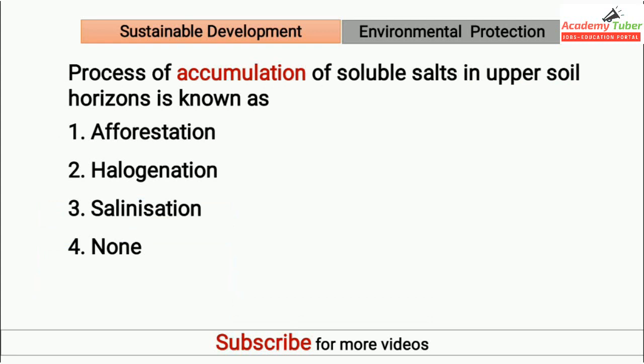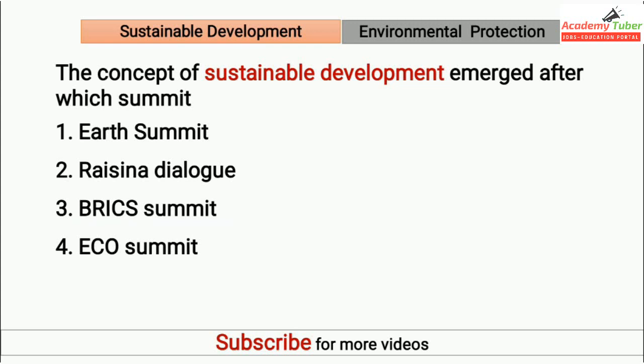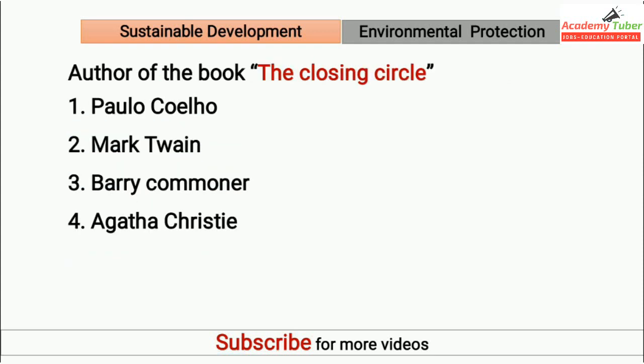Process of accumulation of soluble salts in upper soil horizons is known as? Answer is salinization. The concept of sustainable development emerged after which summit? Answer is the 8th summit. Author of the book The Closing Circle? Answer is Barry Commoner.